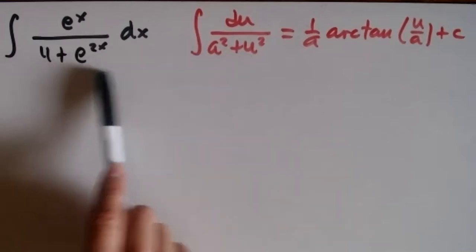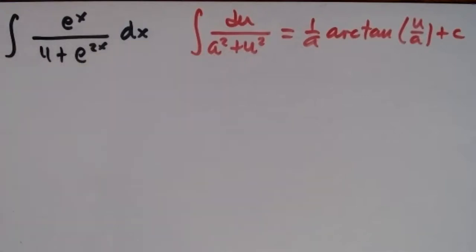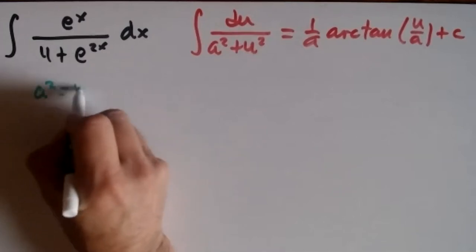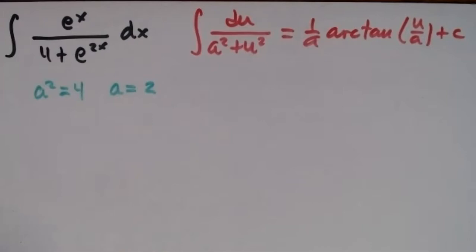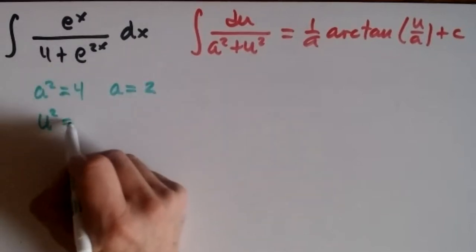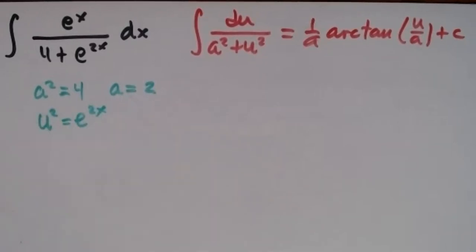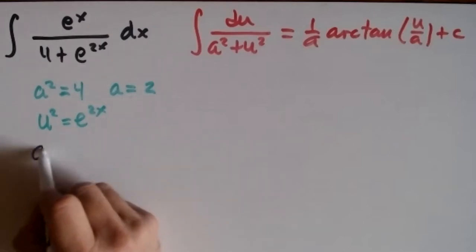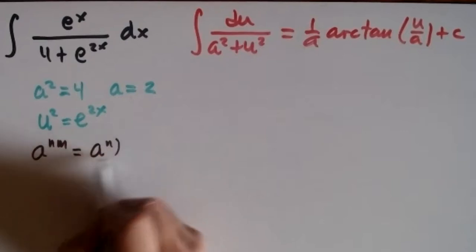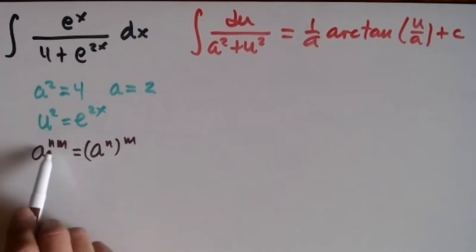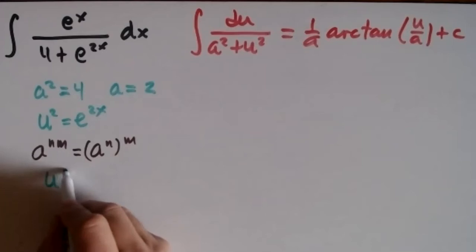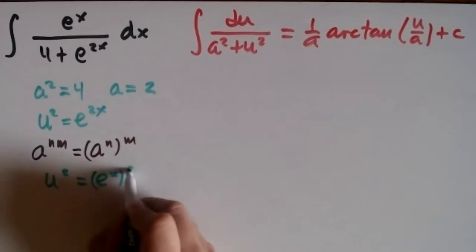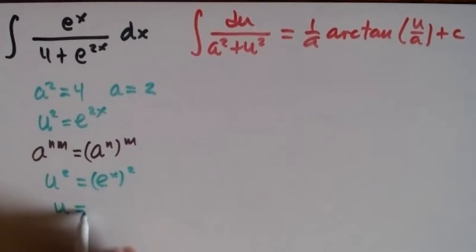The denominator is what I'm trying to match. First, a squared equals 4, so a equals 2, since 4 is 2 squared. Now I match u squared with e to the 2x. Using basic algebra: a to the n raised to the m equals a to the n·m. So e to the 2x equals (eˣ) squared. Therefore u squared equals (eˣ) squared, meaning u equals eˣ.